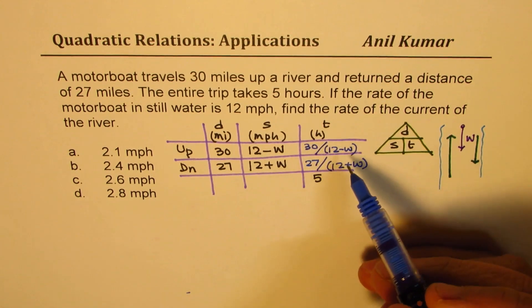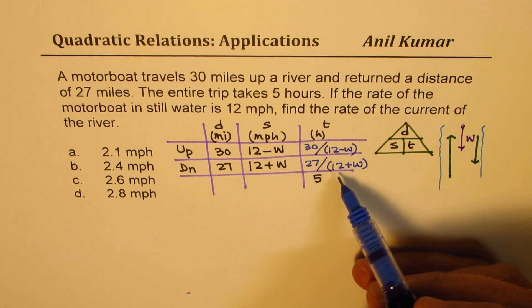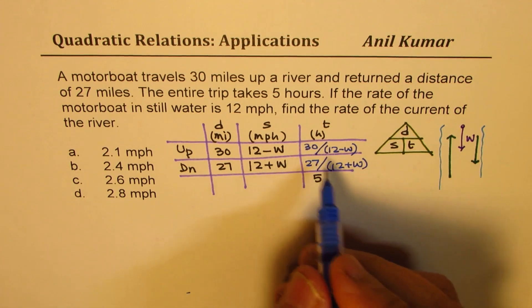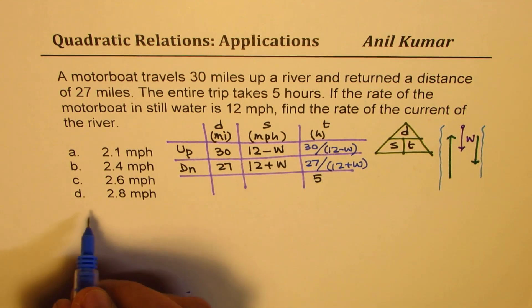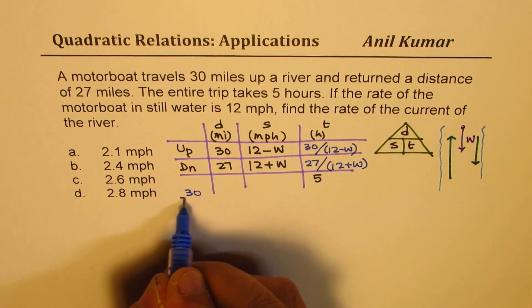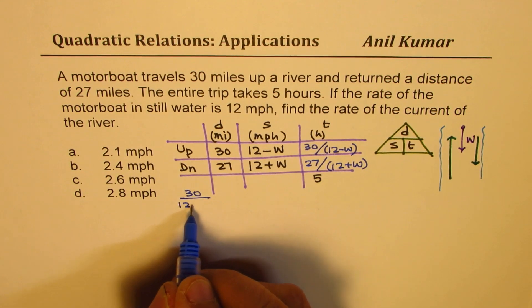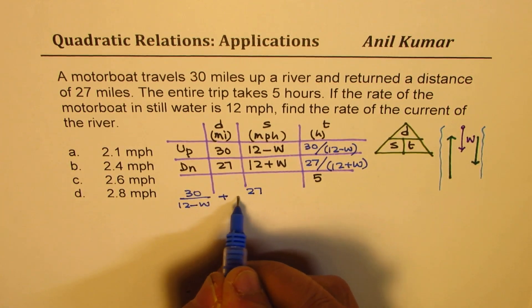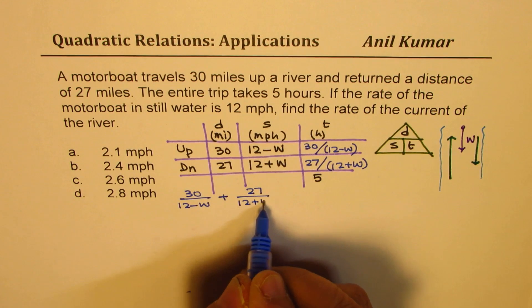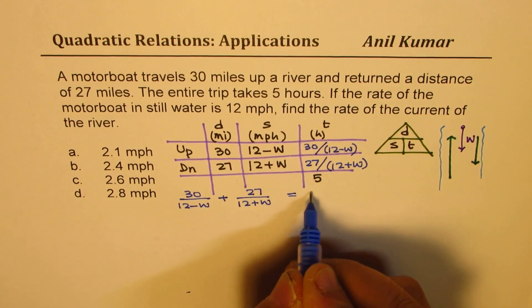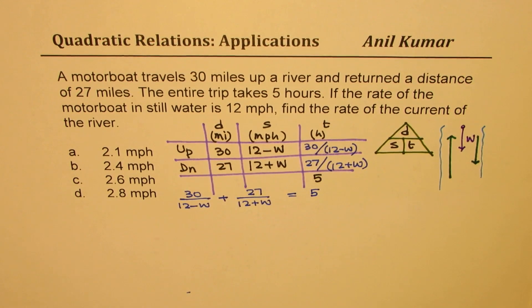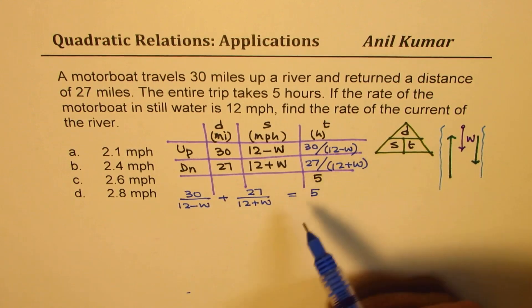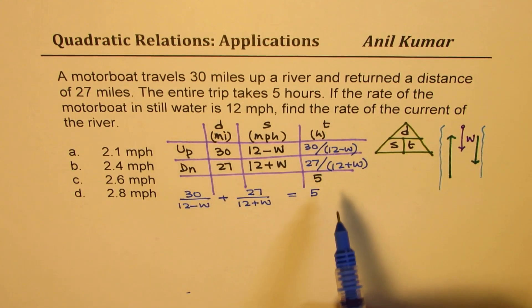So we get our equation directly by adding these two quantities. So we get our equation as, let me write down here, 30 over 12 minus w plus 27 over 12 plus w equal to total time of 5 hours. Does it make sense to you? So it is as simple as that. So once you represent the data as shown here, you can easily see what's going on.